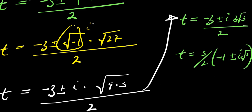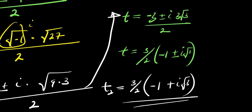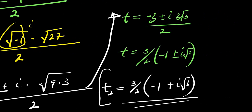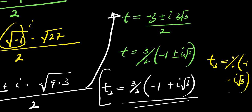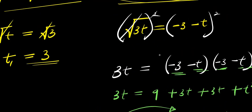So we have two complex values for t. t₂ equals three over two times negative one plus i root three, and t₃ equals three over two times negative one minus i root three. These are the two complex solutions.